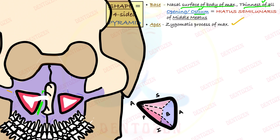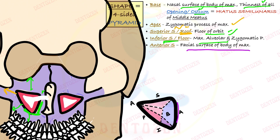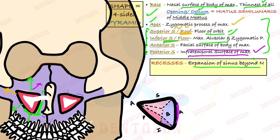The apex is towards the zygomatic process of maxilla. The superior side, also called the roof of the sinus, is towards the orbital surface — the floor of the orbit. The inferior side, also called the floor of the sinus, is towards the maxillary alveolar process and zygomatic process. The anterior side faces the facial surface of the body of maxilla, and the posterior side faces the infratemporal surface. There are also recesses — further expansions of the sinus into the processes of maxilla — most commonly seen as the alveolar recess.